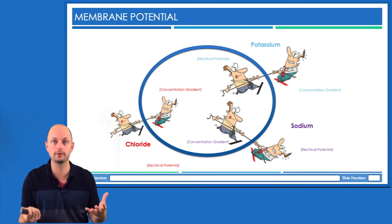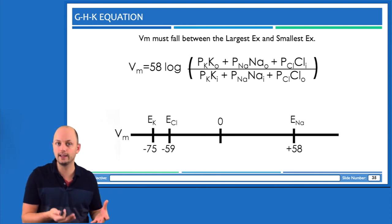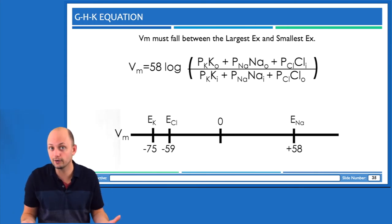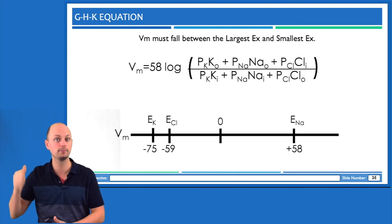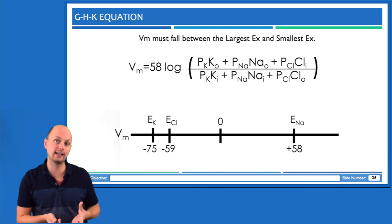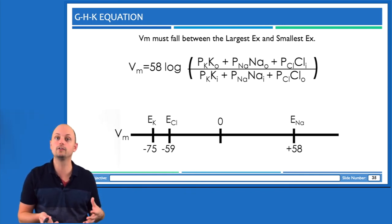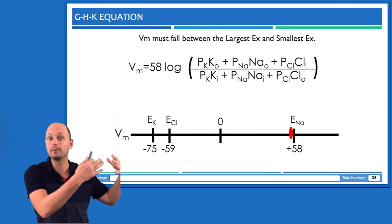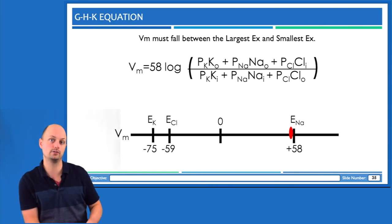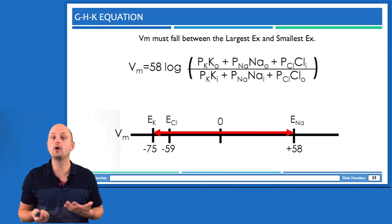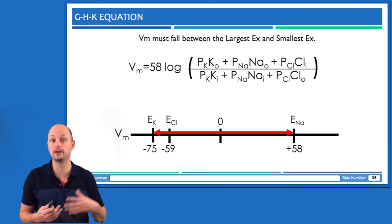So equilibrium potentials determine membrane potential, which means that membrane potential can never be more positive than the most positive equilibrium potential, and can never be more negative than the most negative equilibrium potential. In a tug of war, the furthest you can pull the rope is to the place where you yourself are standing — you can't pull to a position behind you. This is why potassium usually has the most negative equilibrium potential, acting as the floor (lower boundary), while sodium has the most positive equilibrium potential, acting as the ceiling (upper boundary). So membrane potential always falls between roughly minus 75 and positive 58 millivolts.